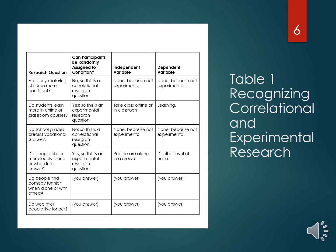Looking at the research questions presented here: are early maturing children more confident? Can participants be randomly assigned to this condition? No — it's a correlational research question, so we can't randomly assign people. It's not experimental, so there's no independent variable and no dependent variable. There are a few more for you to read through, and then two for you to try on your own.